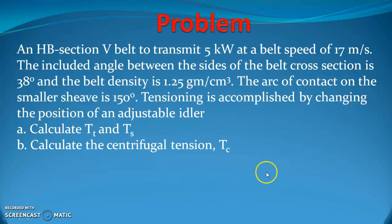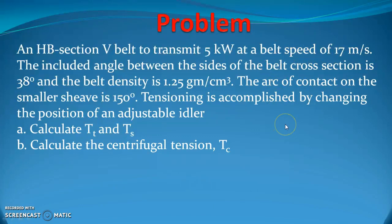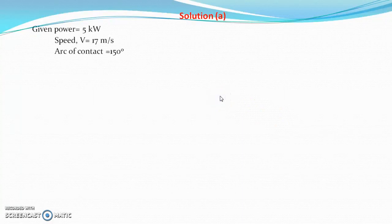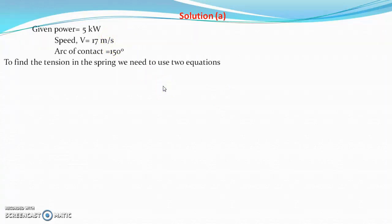This is a straightforward question. The power transmission is 5 kilowatt, speed of the belt is 17 meter per second. The given data: power is 5 kilowatt to be transmitted, speed of the belt is 17 meter per second, and the arc of contact is 150 degree. To find the tension, we need to use two equations.